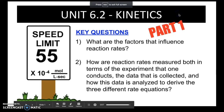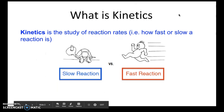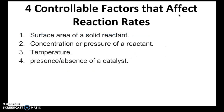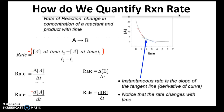Hi, welcome to the Unit 6.2 Kinetics video. This is part one of two. In 6.1 we learned what kinetics is — the study of reaction rates, including how fast or slow a chemical reaction is. We also looked at the factors that control reaction rates: surface area of a solid, the concentration or pressure of a reactant, the temperature, and the presence or absence of a catalyst.